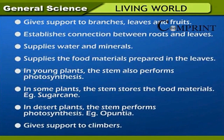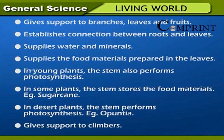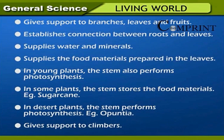Functions of stem: Gives support to branches, leaves, and fruits. Establishes connection between roots and leaves. Supplies water and minerals. Supplies the food material prepared in the leaves. In young plants, the stem also performs photosynthesis. In some plants, the stem stores food material — example: sugarcane. In desert plants, the stem performs photosynthesis — example: Opuntia. Gives support to climbers.